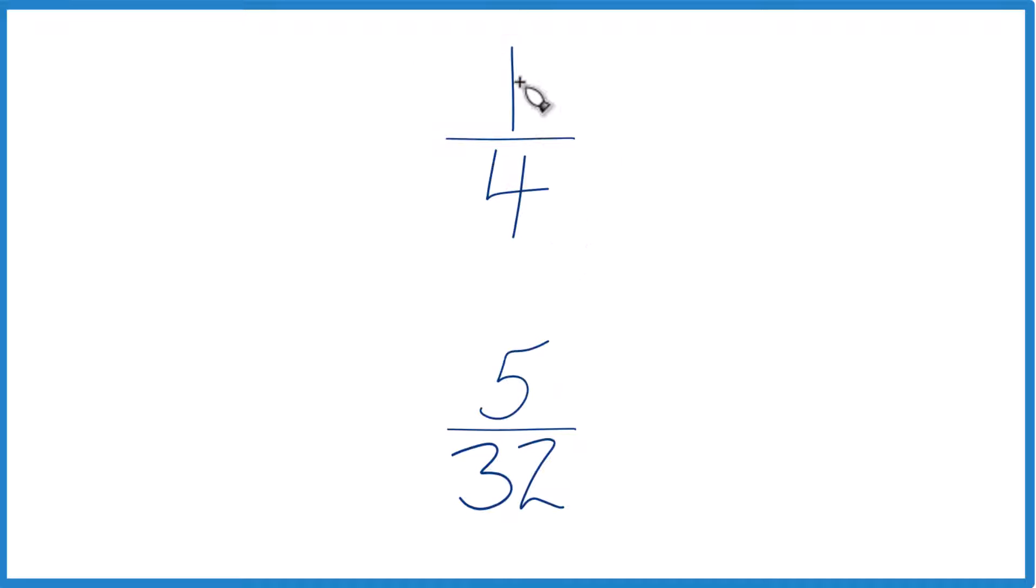One way to do it is divide 1 by 4 in a calculator, and then divide 5 by 32 on a calculator. Just compare the decimals. See if 1 fourth is greater than or less than 5 32nds.